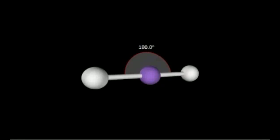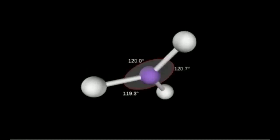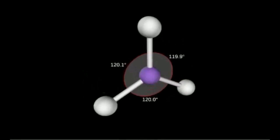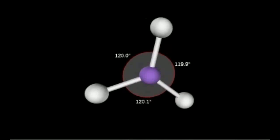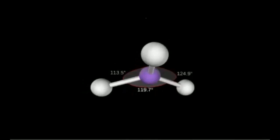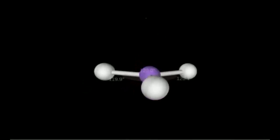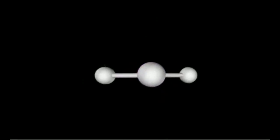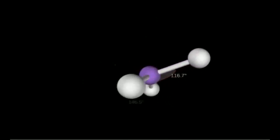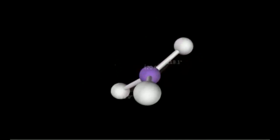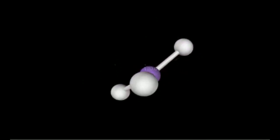If we have AB₃ type — three bonded atoms — the bond angle is 120°. It is trigonal planar. Why is it planar? Because all these atoms are in one plane, as you can see here.